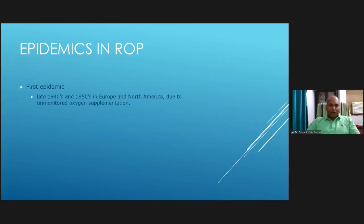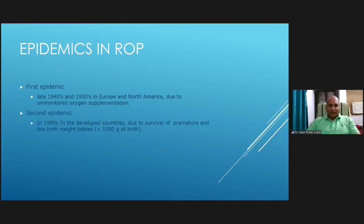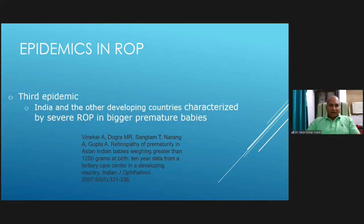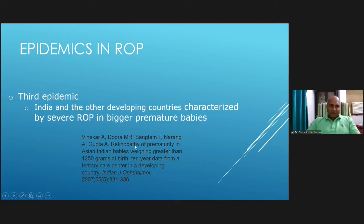We have had epidemics of ROP. The first epidemic was in the late 1940s and 1950s when premature infants in hospitals were given unregulated and unmonitored oxygen supplementation. There was a second epidemic in developed countries due to increased survival of premature and low-weight babies. Now we are in a third epidemic in developing countries like India, characterized by severe ROP in relatively bigger premature babies.